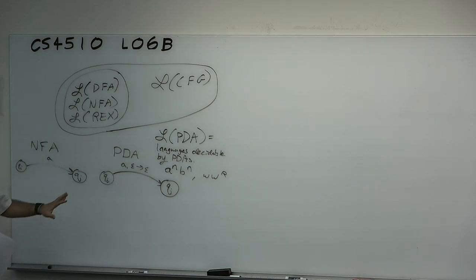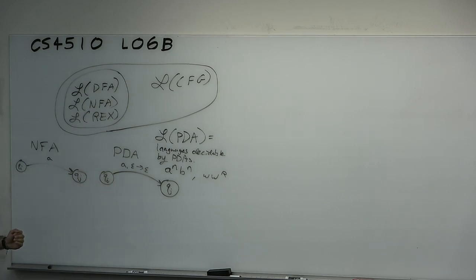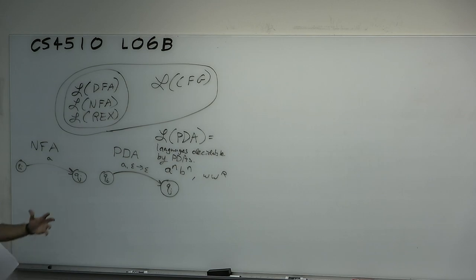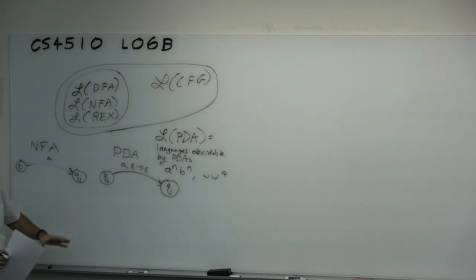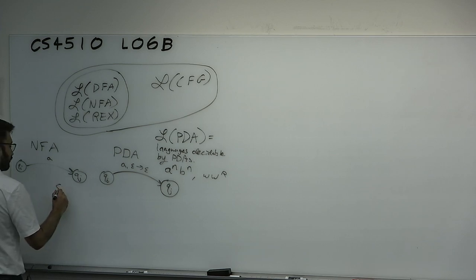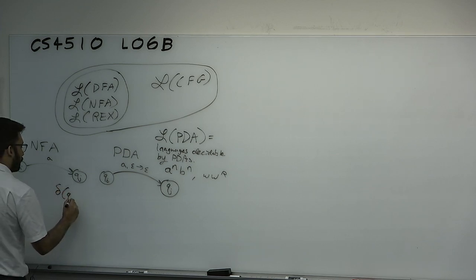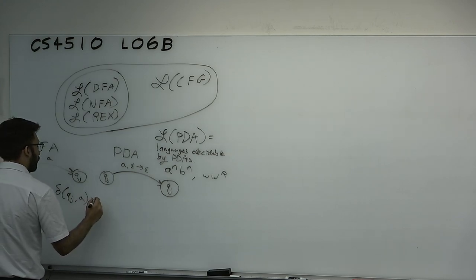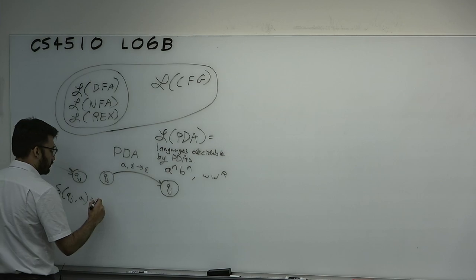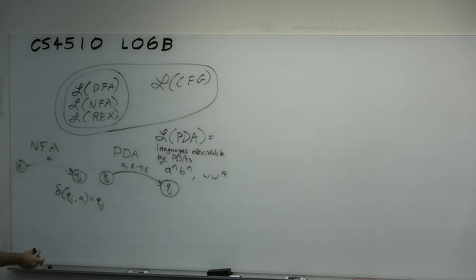The NFA transition function goes: we're at q_i, we see symbol A, we go to q_j. For the PDA, we would be at q_i, read nothing off the stack, and then go to the pair of what state we'd be at and what we'd write to the stack. So it would be the pair (q_j, epsilon) — identically the same behavior. The regular languages are all decidable by pushdown automata by converting any NFA to a PDA.